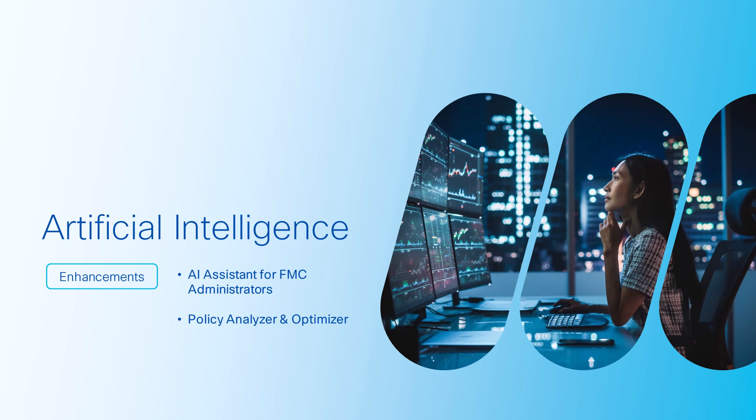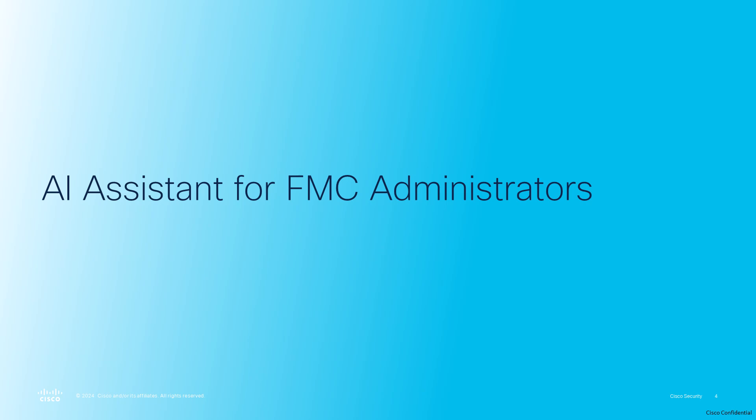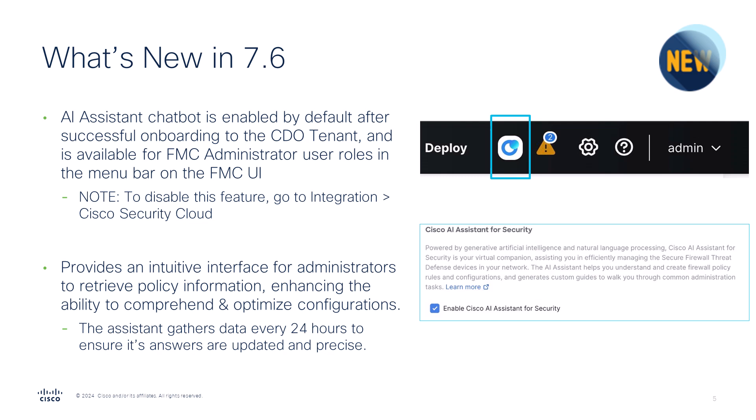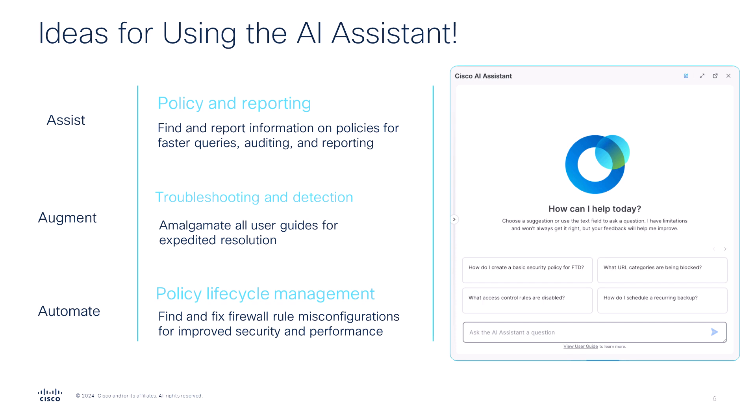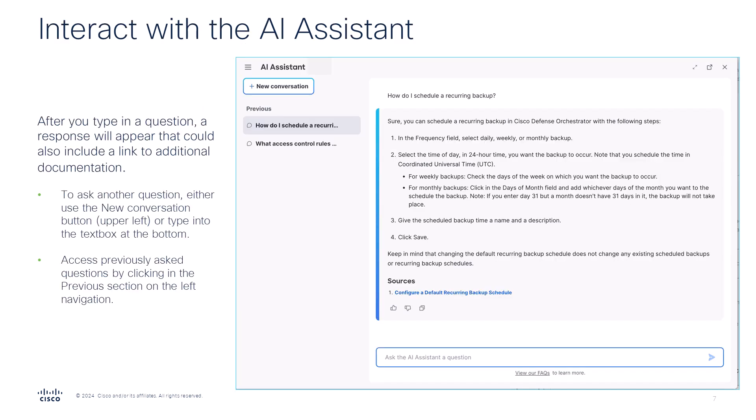Getting us started, we have everyone's favorite, artificial intelligence, with two new features of note. The first is AI Assistant for FMC, where the AI Assistant chatbot is enabled by default upon successful onboarding to the CDO, or newly named Security Cloud Control tenant, and allows FMC administrator user roles to access it in the menu bar. Upon being selected, the chatbot provides an intuitive interface for administrators to obtain information on policies, expedite troubleshooting and detection, and locate misconfigurations for update to improve the device's security and performance. To interact with the AI Assistant, all you need to do is type your question in the search bar, and a response will appear with source information in the same window.